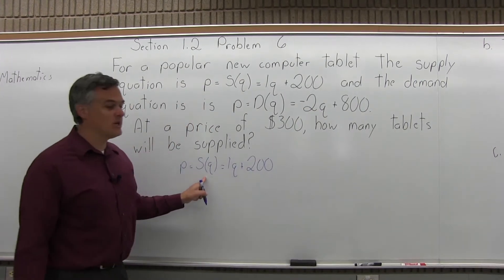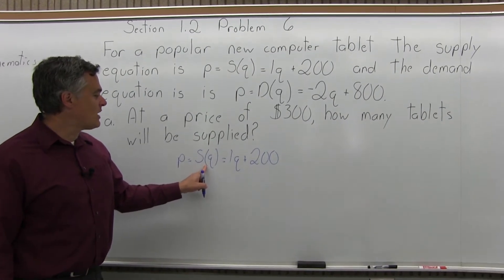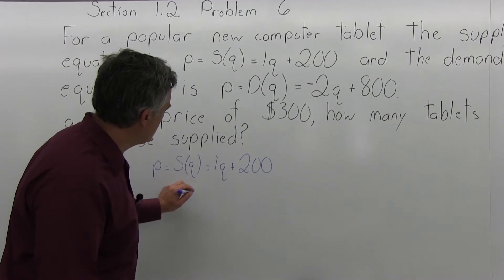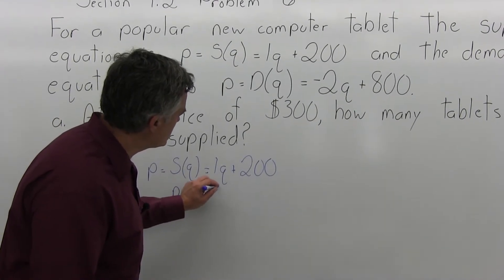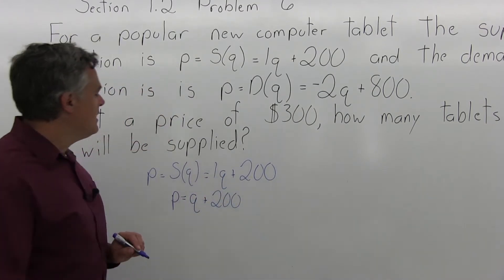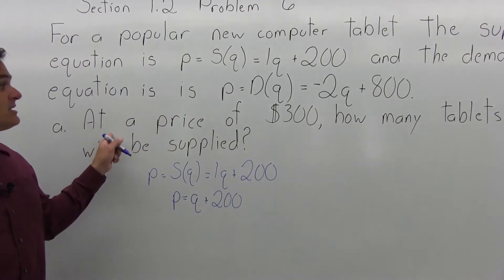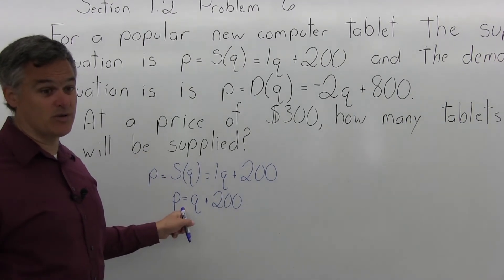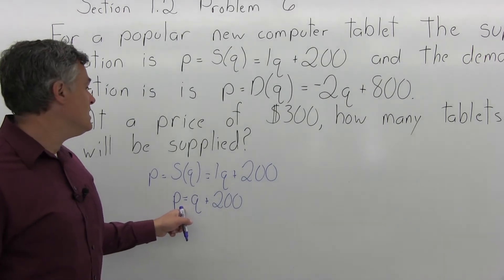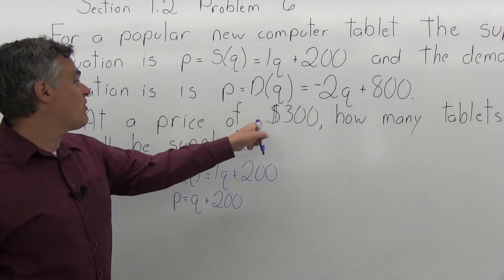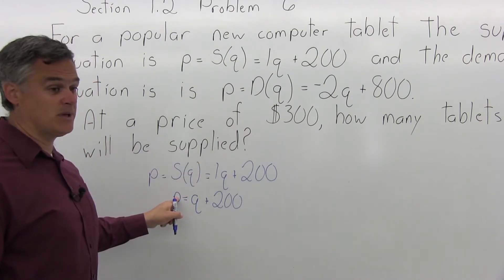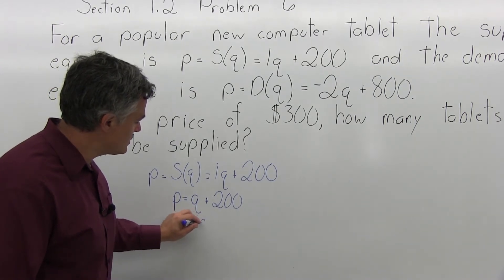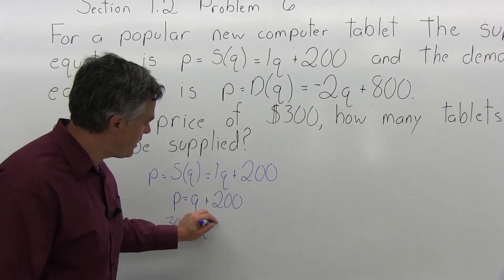Once you've chosen the supply equation, I prefer not to write it with the S(Q) in the middle. We can simplify it to P equals Q plus 200 — instead of 1Q, we just write Q. Now, it says at a price of $300, how many tablets will be supplied? We put 300 in for P, since P is for price and Q is for quantity. So this becomes 300 equals Q plus 200.